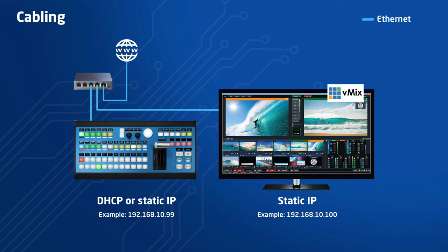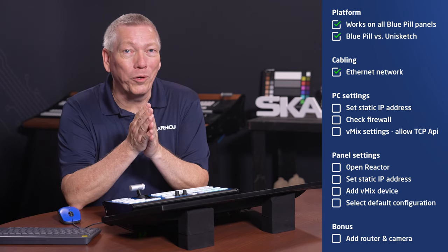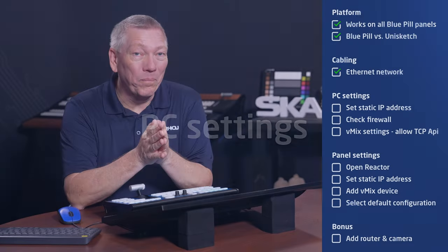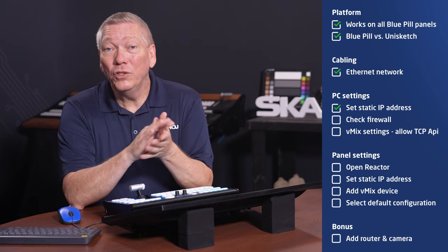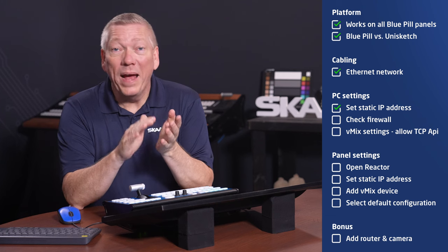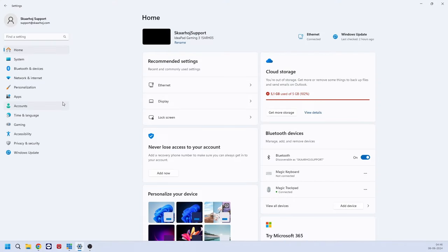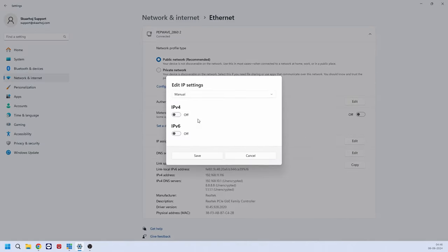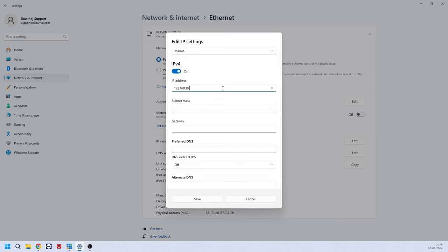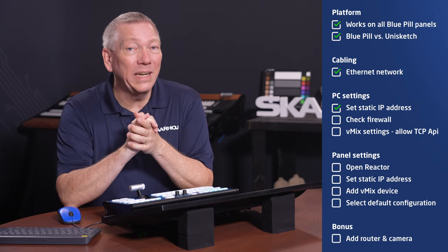The PC must have a static IP address. This is used by the panel to find the PC on the network. Next, we handle the settings on the computer. I'm using Windows 11, but Windows 10 will be fairly similar. First, we need to set a static IP address. It's done in Settings, Network and Internet, Ethernet, and Edit IPv4. Set to Manual and enter an address. We'll use 192.168.10.100, but you can use any other address as long as the computer and panel are in the same subnet range.